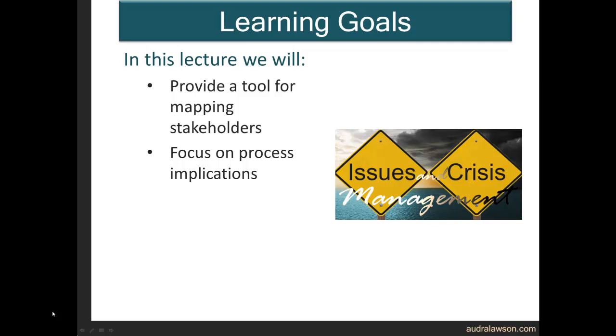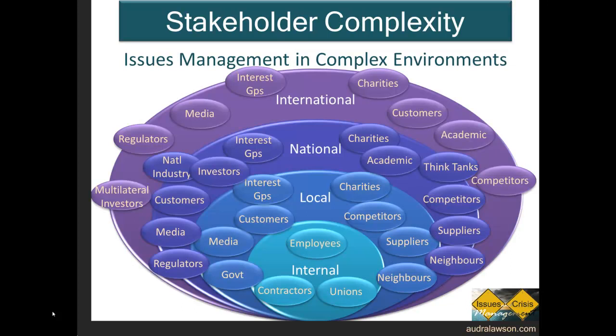The objectives for this lecture are twofold: to primarily focus on providing a research-based tool for mapping stakeholders, but also to focus on the process implications. This is where we left off last time, trying to figure out where to start with issues management. If issues management is about anticipating stakeholder interests and needs, then an organization should begin by understanding who its stakeholders are and what their relationship to the organization is.